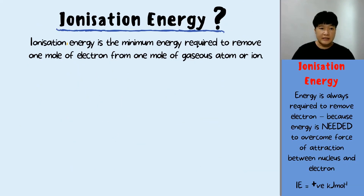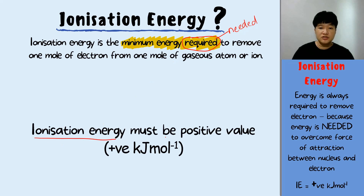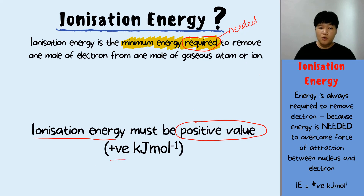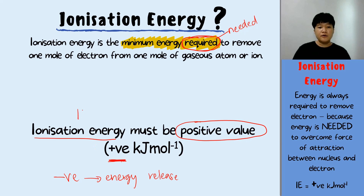Looking at the definition again, ionization energy is the minimum energy required. Why minimum energy required? From the word 'required' we know it means needed. So ionization energy must be a positive value — when energy is needed, you must always have a positive value. Negative value means energy is released.